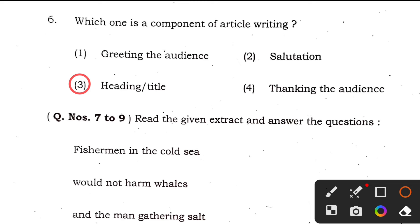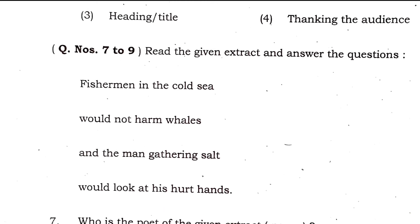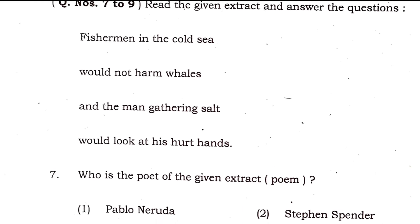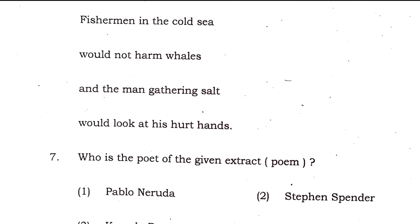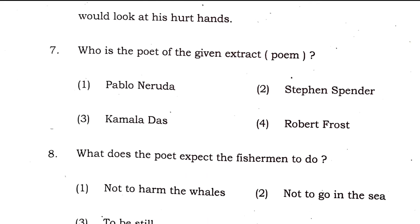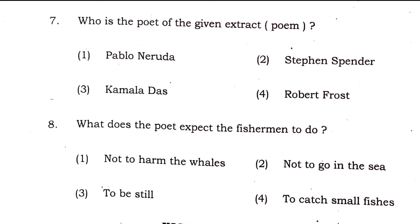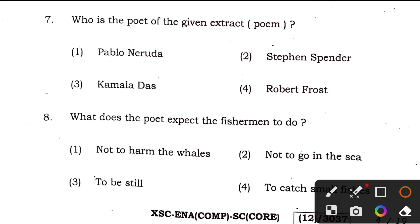Moving to the literature section where poetry is given. The lines are: 'The fisherman in the cold sea would not harm whales, and the man gathering salt would look at his hurt hands.' From these lines you can identify the poem and the poet. Question 7: who is the poet? Answer is option 1, Pablo Neruda.